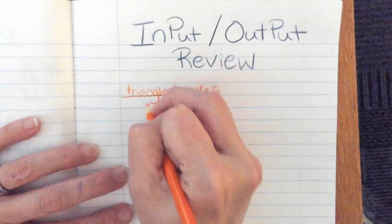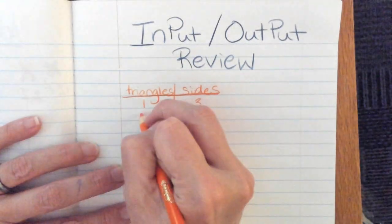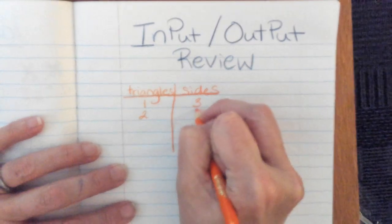So then if you have one triangle, you have three sides, right? Two triangles, six sides.